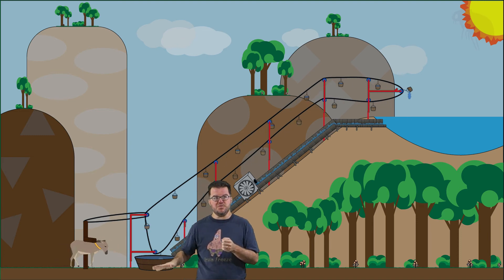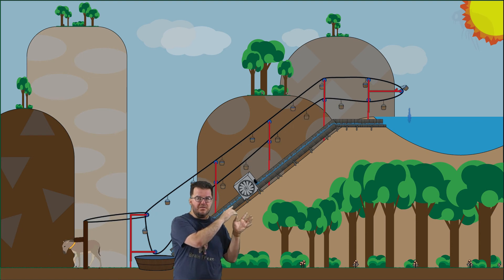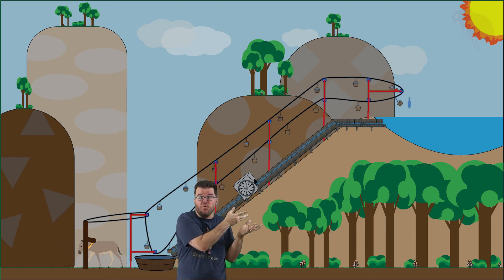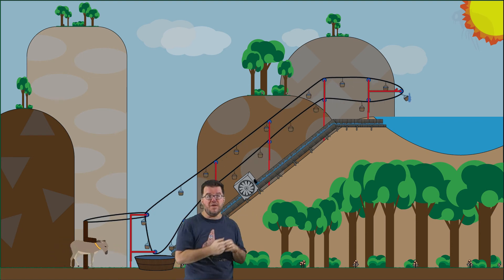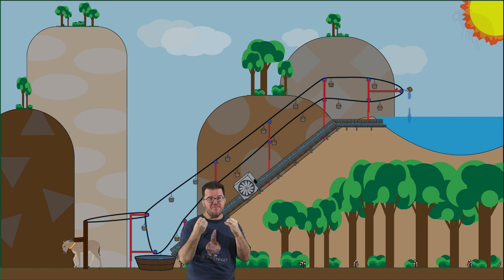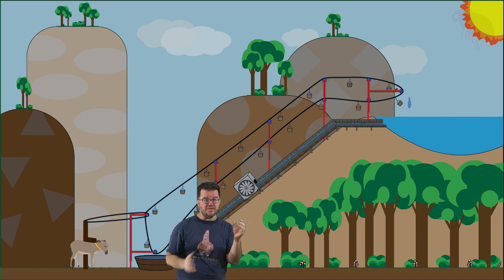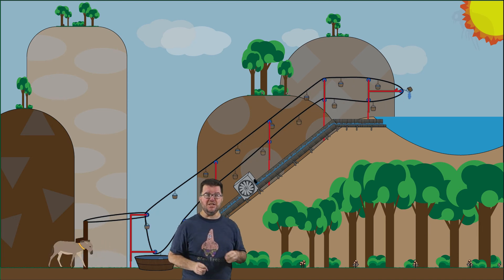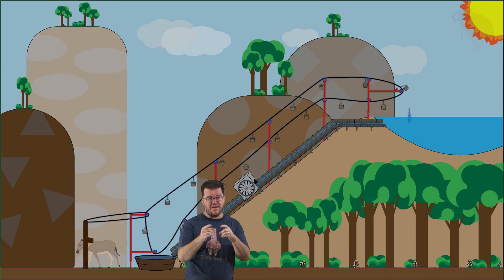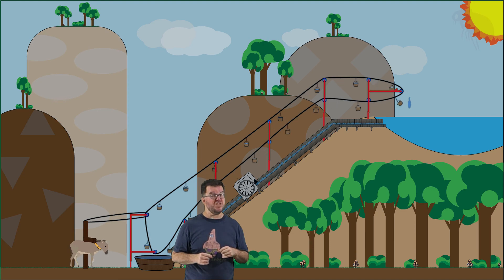We're spending energy one place so that we can do some active transport driven work another location. This idea of energy spent in one case to power something else is the entire principle behind secondary active transport, and now is the time I think to go watch that video.